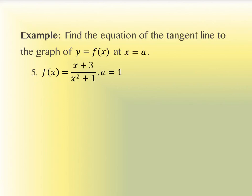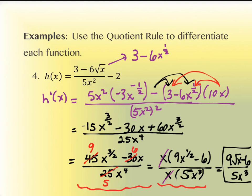Regarding whether answers match the back of the book: sometimes the book simplifies further, sometimes not. The key is to reduce what can be reduced. For instance, leaving the answer as 9√x or 9x^(1/2) are both fine — those are just different ways of writing the same thing. But leaving the 5s un-cancelled, or leaving x in every term when it can be factored out, would not be acceptable since those can actually be reduced.